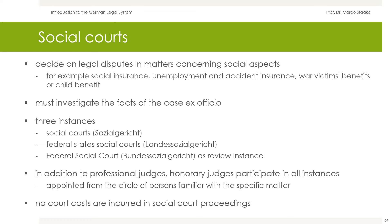Social courts decide on legal disputes in matters concerning social aspects — such as social insurance, unemployment and accident insurance, war victims' benefits, or child benefits. Social courts must investigate the facts of the case ex officio. The three instances of social jurisdiction are the social courts, Sozialgerichte, the federal state social courts, Landessozialgerichte as appeal instance, and the Federal Social Court, Bundessozialgericht, as review instance. In addition to professional judges, honorary judges participate in all instances, appointed from persons familiar with a specific matter. No court costs are incurred in social court proceedings, to enable everyone to assert claims subject to social jurisdiction, as these are usually claims necessary to cover the costs of living.